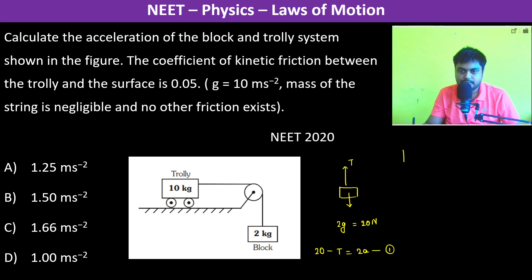Now for the trolley, this is T. This is 10 kg, so therefore 10g which is equal to 100 newtons, and this is normal reaction. So therefore, normal reaction is equal to 100 Newton and the kinetic friction...